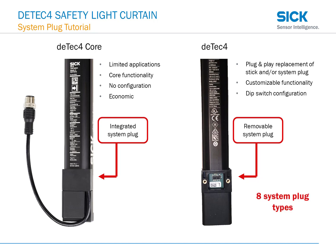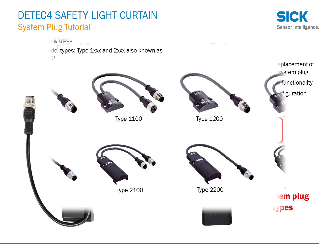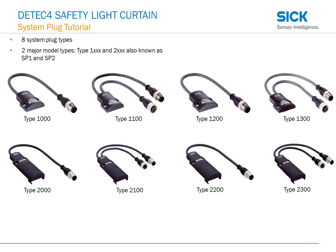There are eight total system plug types. There are two major model types: type 1X and type 2X, also known as SP1 and SP2. Let's go through the SP1 models first.